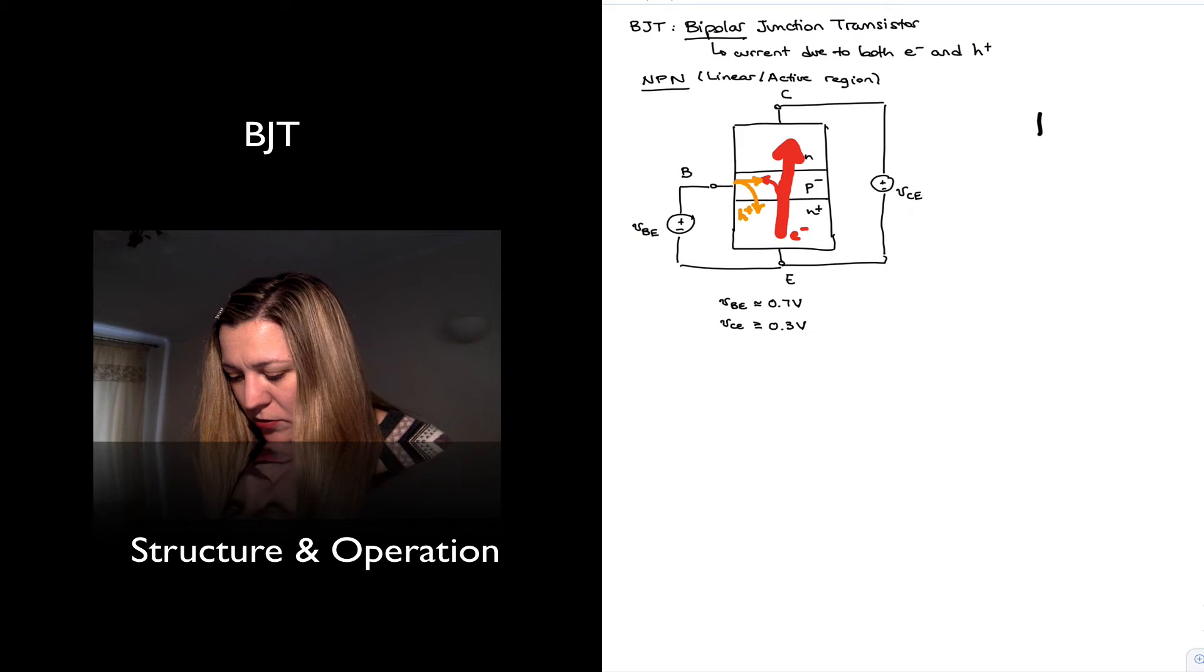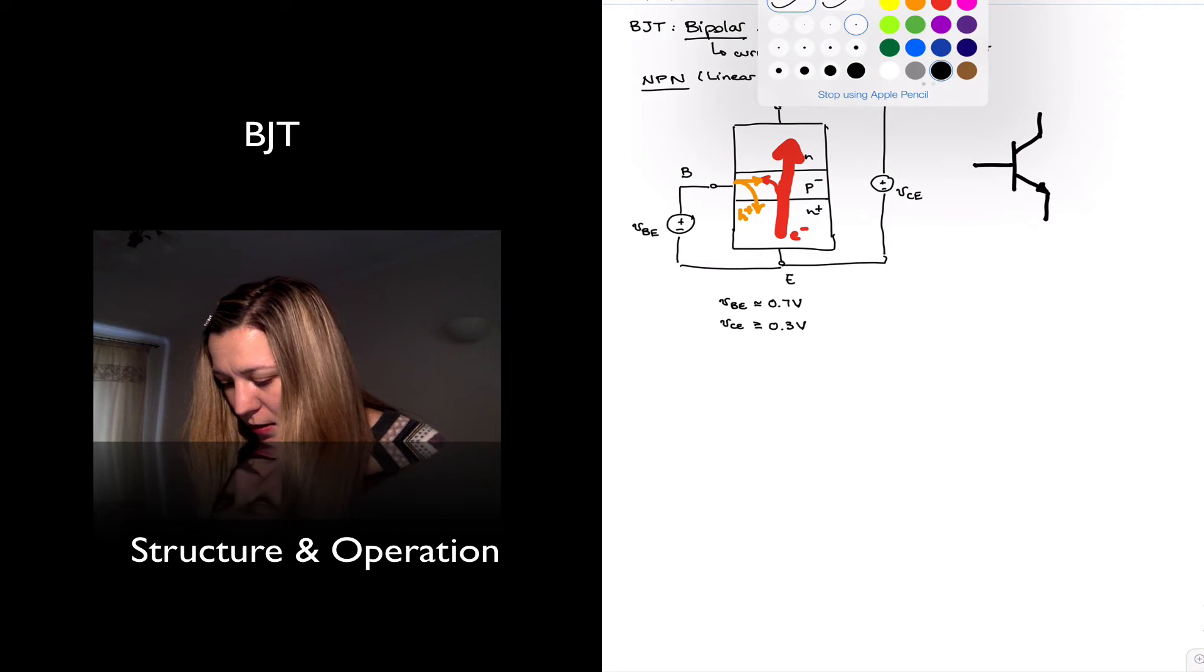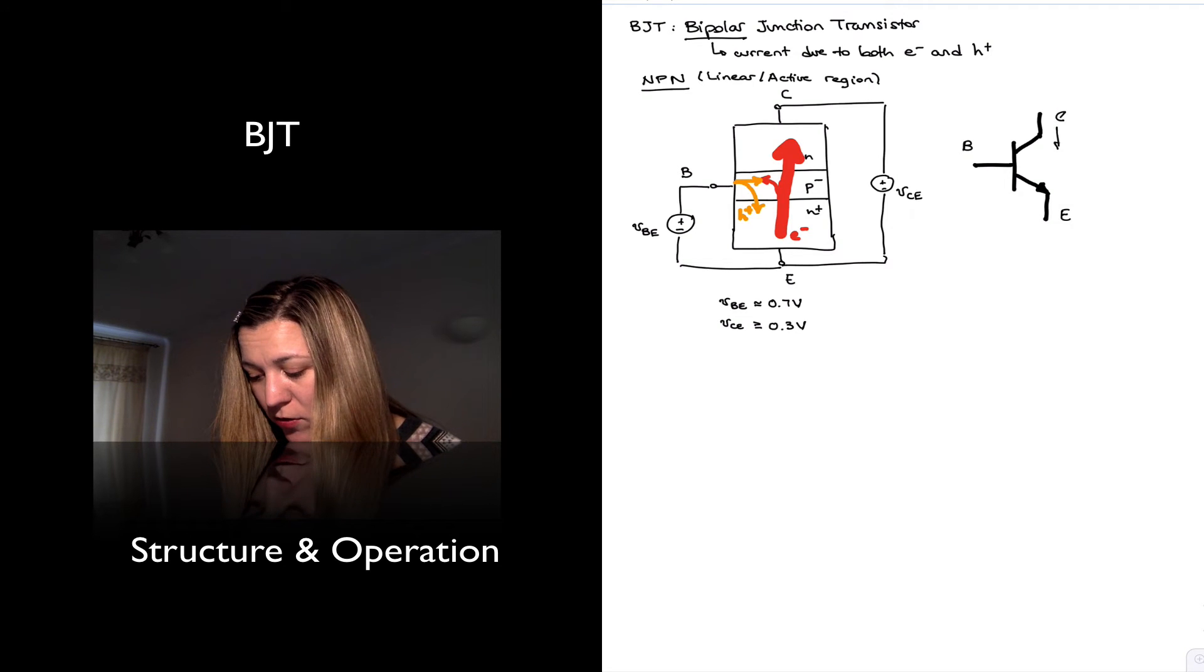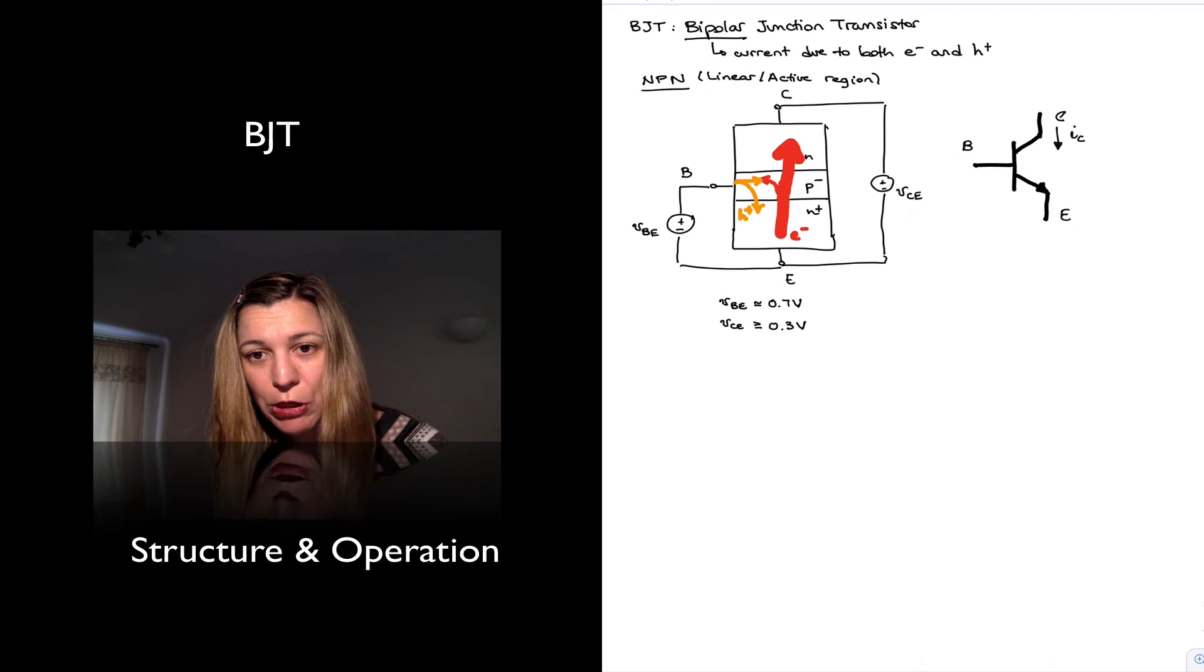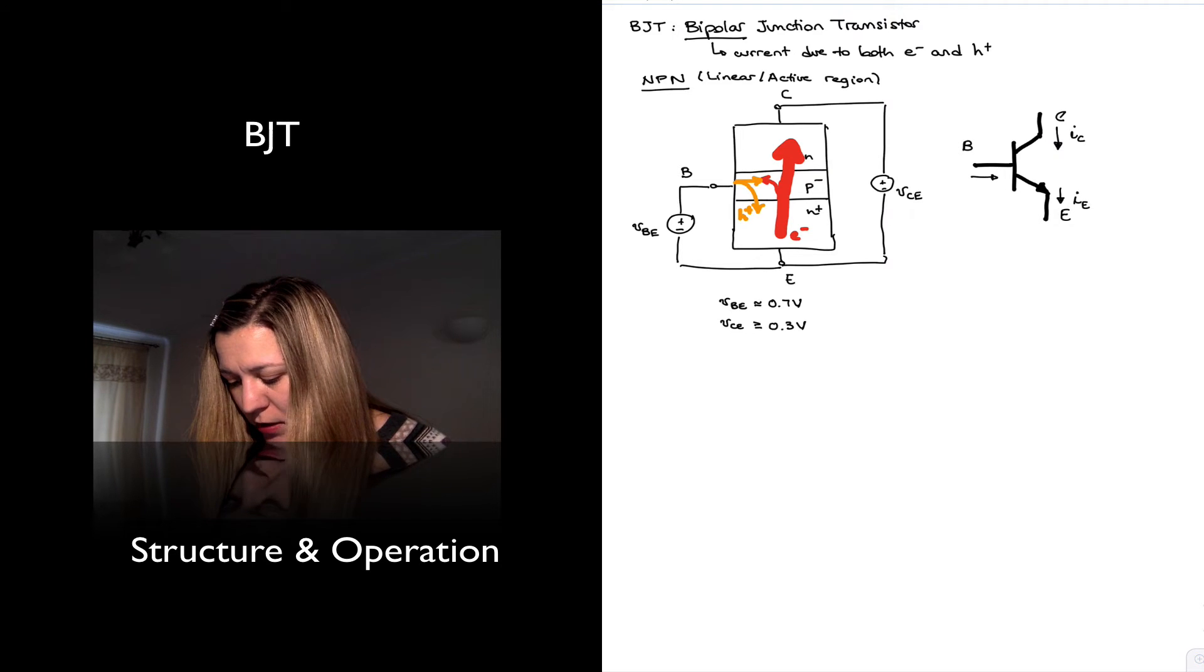So if I am to represent the NPN transistor by its circuit symbol, I will have here my collector, my emitter, my base. And I will see that there is some current flowing into the collector terminal. Again, it's the opposite direction of the flow of electrons. Some current flowing out of the emitter terminal and some current flowing into the base.